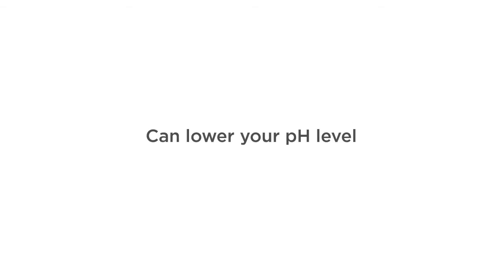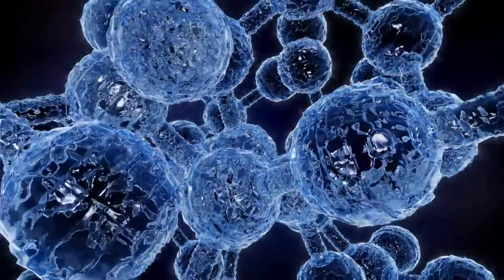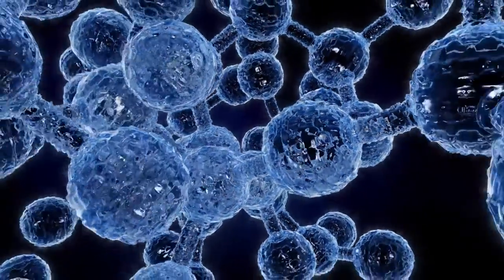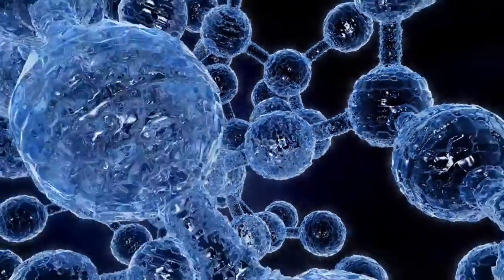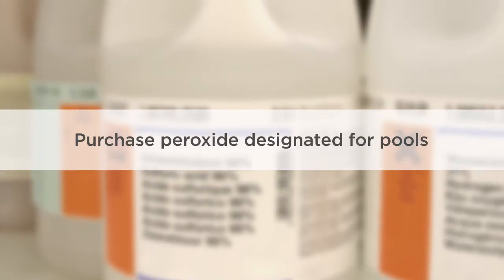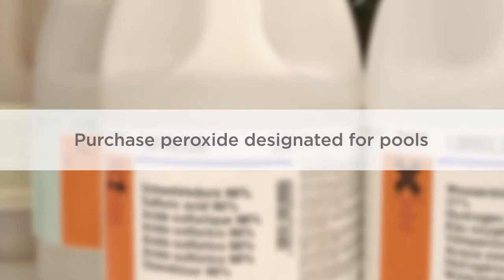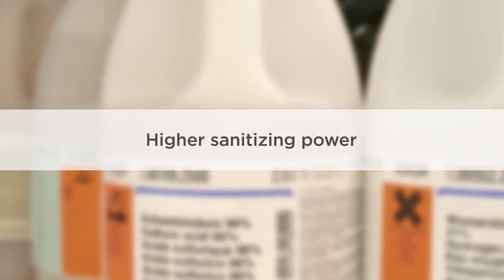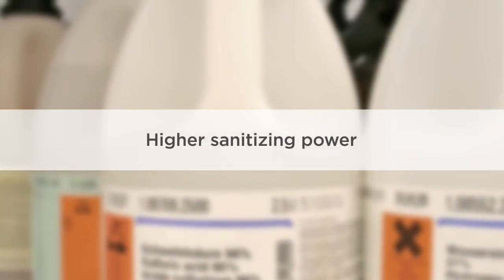This route can lower your pH level, so allow for time to adjust your pH after adding in the thiosulfate. Hydrogen peroxide is another chemical that can lower the chlorine level. Be sure to purchase the peroxide designated for pools, as it offers a higher sanitizing power.